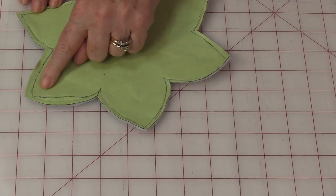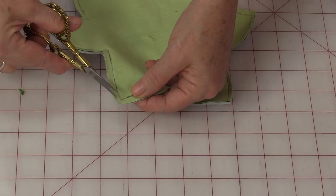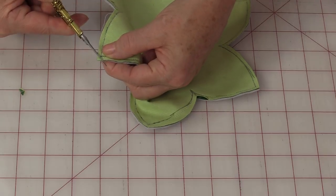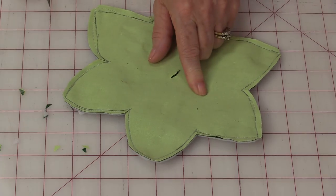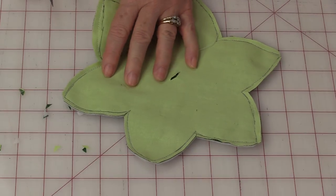The next will be trimming off the points. Just trim off those points going right to those threads. From here we can turn it right-side out or we can do a little bit more trimming.